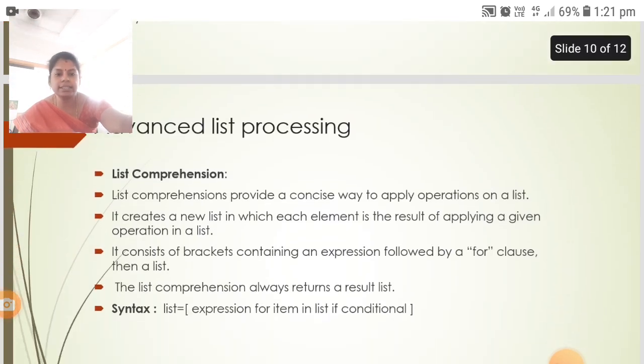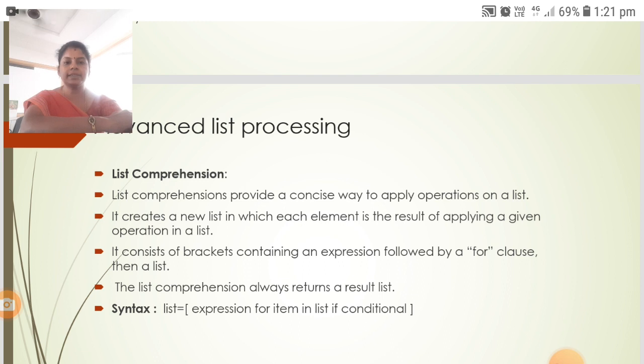Advanced list processing: List comprehension provides a concise way to apply operations on a list. It creates a new list in which each element is the result of applying a given operation on a list. It consists of brackets containing an expression followed by a for clause, then a list. The list comprehension always returns a result list.